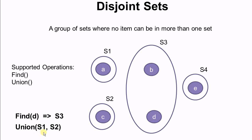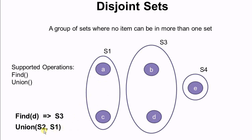Union takes two disjoint sets as parameters, and as a result those two disjoint sets will be merged into one set. So the result of union(S1, S2) is that both S1 and S2 are merged into the same disjoint set S1, and both A and C are items inside S1.